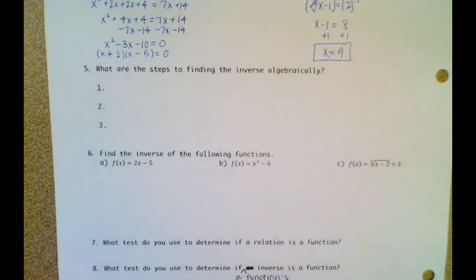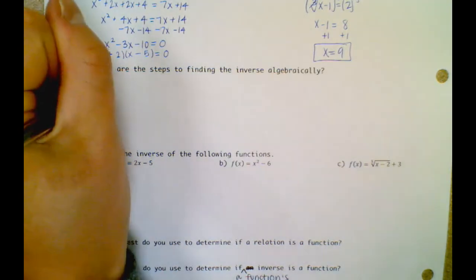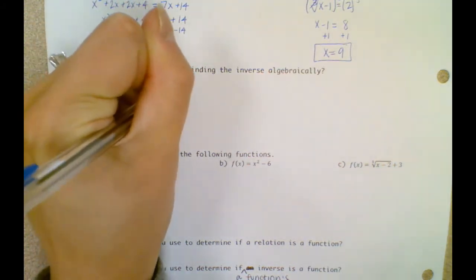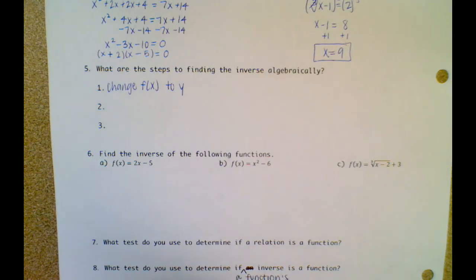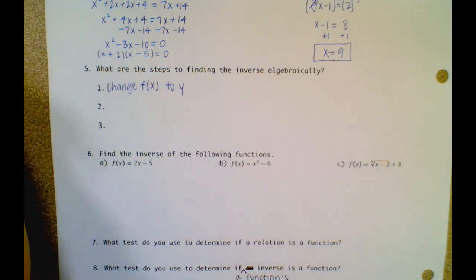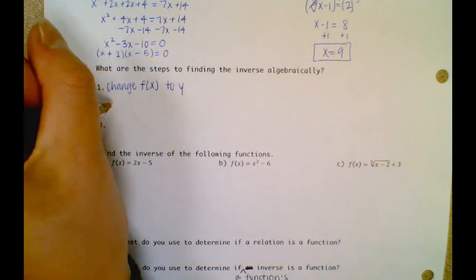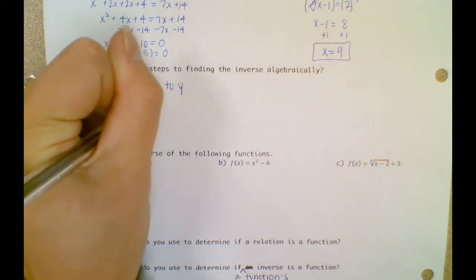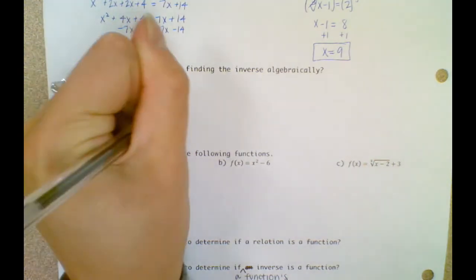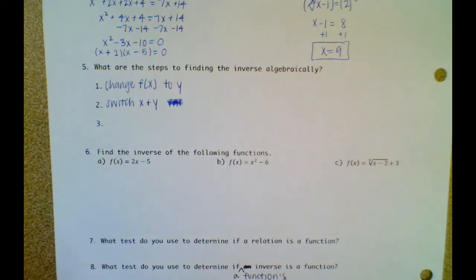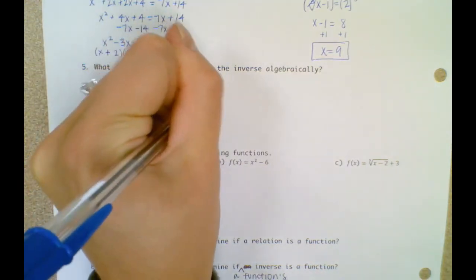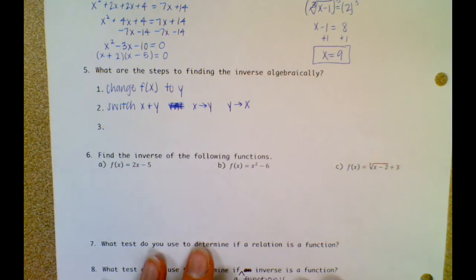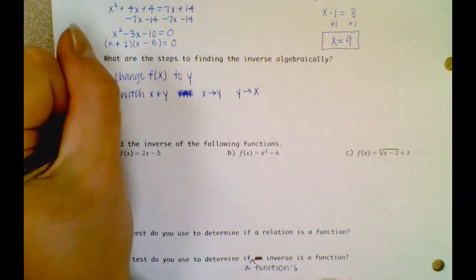What are the steps to finding the inverse algebraically? Step 1 is to change f of x to y. Step 2 is to switch your x and y values — that means x becomes y and y becomes x; you're not switching the whole term, just the variable. And then step 3 is to solve for y.